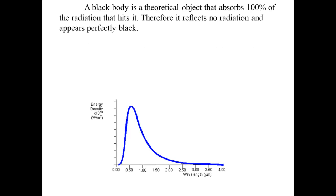Black body radiation. A black body is a theoretical object that absorbs 100% of the radiation that hits it. Therefore, it reflects no radiation and appears perfectly black.